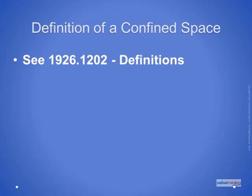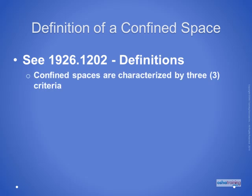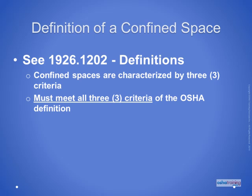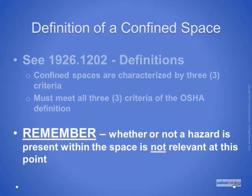The OSHA definition of a confined space can be found in 1926.1202 definitions. There, you will find a confined space is characterized by three criteria. Be mindful that all three criteria must be in place to meet the OSHA definition. Also, keep in mind that whether or not a hazard is present inside the space is not relevant at this point — you are only trying to identify the confined spaces at your job site.